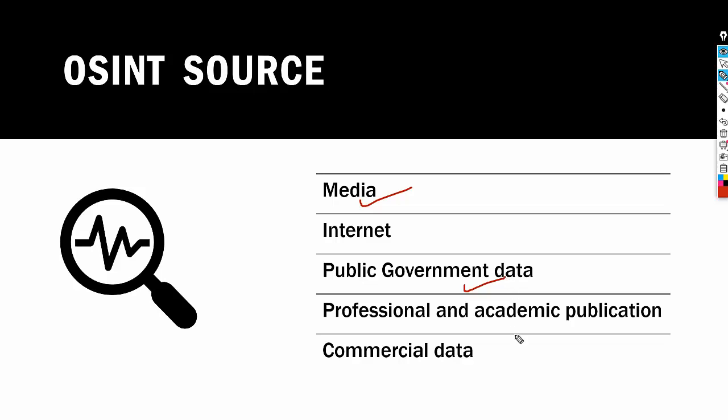Then we have professional and academic publications — information acquired from journals, conferences, academic papers, dissertations, and theses. Finally, we have commercial data: there are many private companies that also provide information, such as commercial imagery, financial data, brand endorsement databases, and Zoom. These are the sources from which we collect information. Collecting is not the challenge — the challenge is sorting and analyzing.